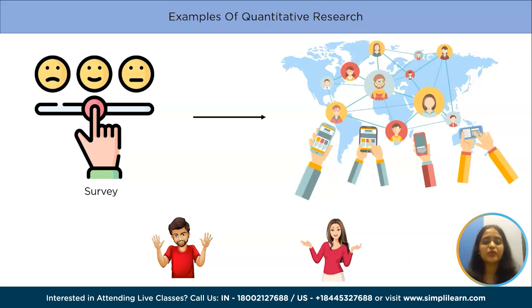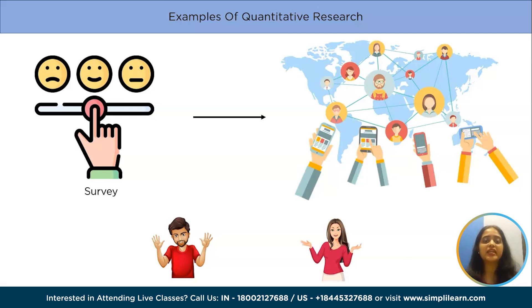The response includes a 7-point scale option, with 7 denoting strong agreement, 6 with agreement, 5 with mild disagreement, 4 with neutral agreement, 3 with moderate disagreement, and 1 with strong disagreement. This is how a quantitative survey is conducted. This data helps to gain insight into the societal mindset and draw conclusions accordingly.